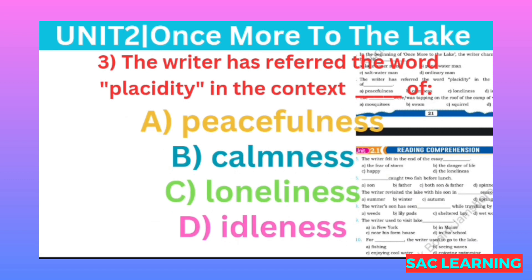Number three: The writer has referred to the word 'placidity' in the context of — (musnif nai kis tanazir mein lafz placidity ka hawaala diya hai?) Option A: peacefulness, B: calmness, C: loneliness, D: idleness. Correct option is B, calmness.